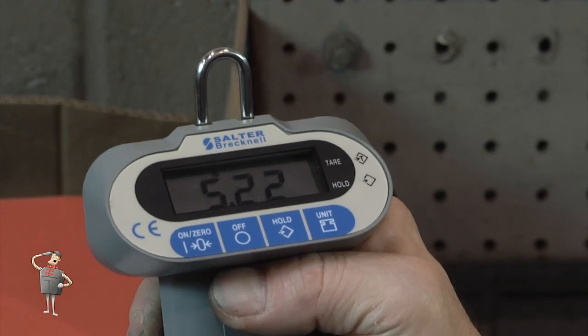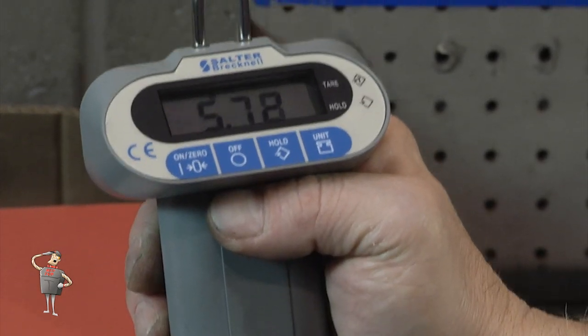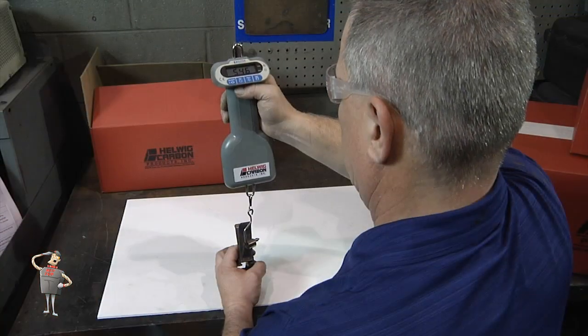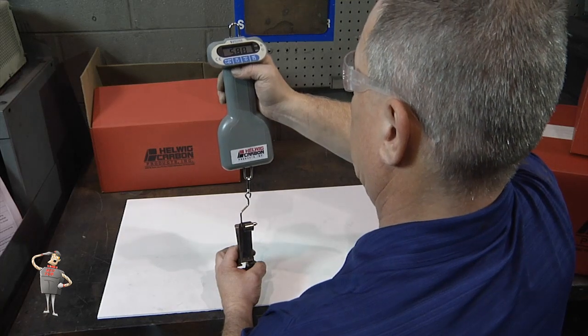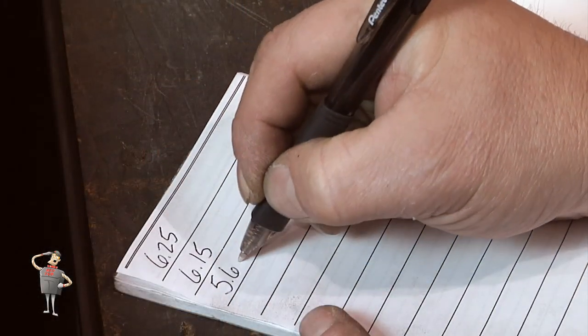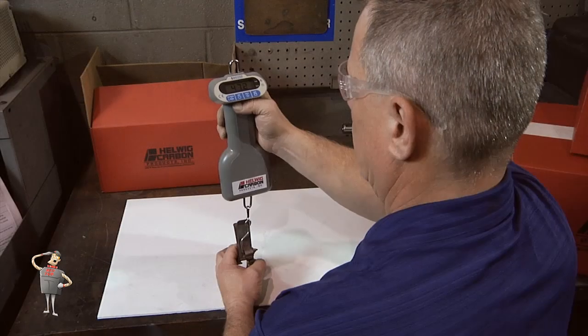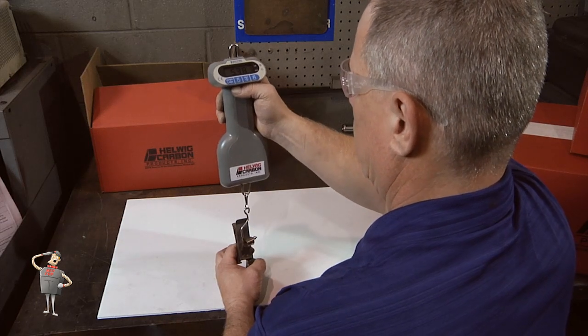As you do, watch the large, easy-to-read digital LCD display to determine the amount of the measured spring force. Record your readings. To double-check your results, repeat the process.